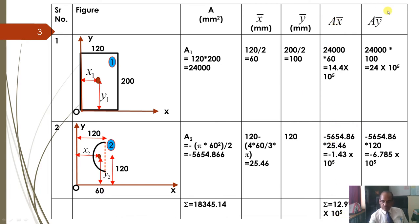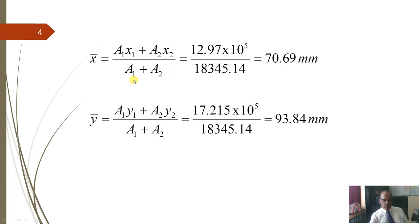So, a2 x2 you write here, then a2 y2 you write here and then take summation of area, summation of ax and summation of ay and now you substitute in the same equation, we got total summation of ax is 12.97 into 10 raise to 5 and total area is 18345.14 and hence we got x-coordinate is 70.69 mm. Similarly, y-coordinate we got total summation of ay, 17.215 into 10 raise to 5, area this and this is same. And if you calculate this, you will get y-coordinate of centroid is 93.84 mm. So, I hope it is clear, you try to solve, if any difficulty you can ask me in Google class.